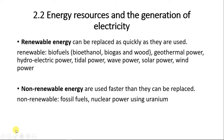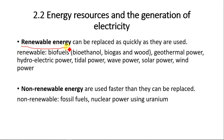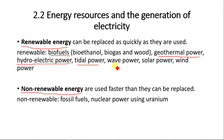First and foremost, there are two major types of energy. We have renewable energy and non-renewable energy. Renewable energy can be replaced as quickly as it is used. Renewable energy includes biofuel — which can include bioethanol, biogas, and wood — these are sources of energy that can be produced from plants. Also geothermal power from plate tectonic activities, hydroelectric power from water, tidal power, wave power, solar power, and wind power. We're going to look at these individually — how they generate electricity and their advantages and disadvantages.